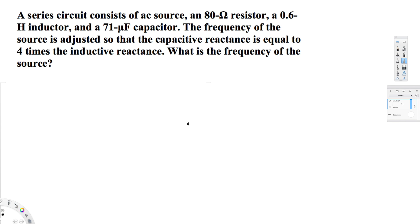Let's look at this problem. This question asks: a series circuit consists of an AC source, an 80-ohm resistor, a 0.6 henry inductor, and a 71 microfarad capacitor. The frequency of the source is adjusted so that the capacitive reactance is equal to four times the inductive reactance. This is the most important information.